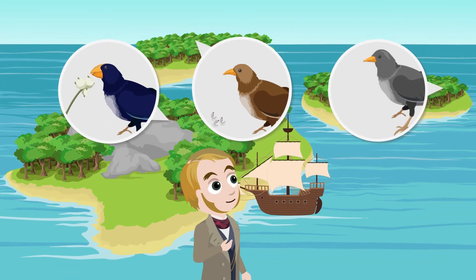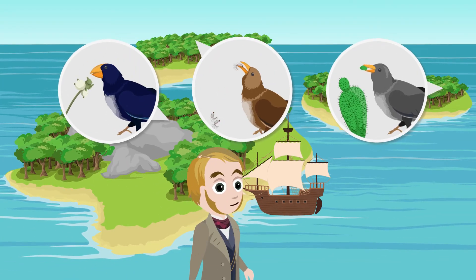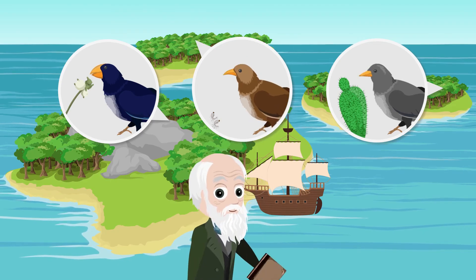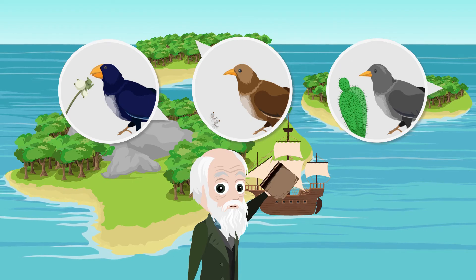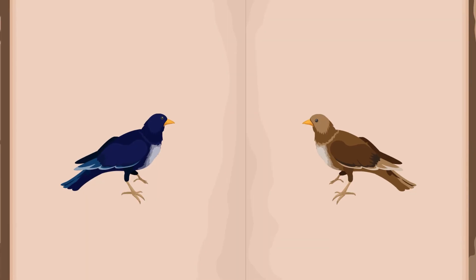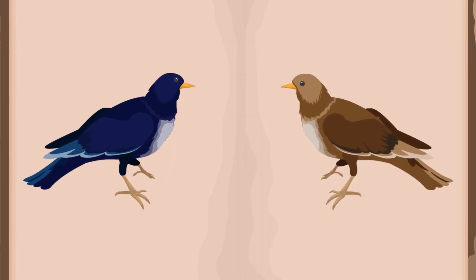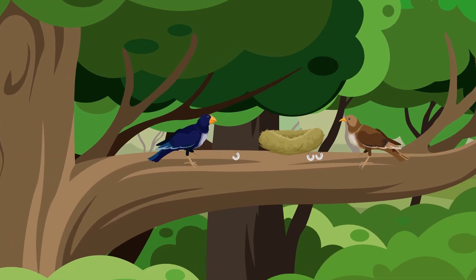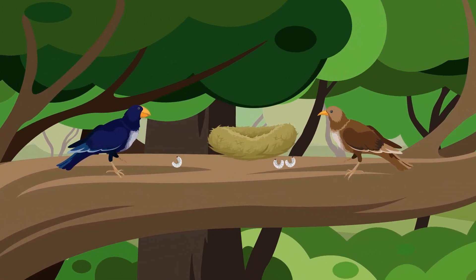Darwin thought that the birds had adapted to their environments and he developed a theory. In the year 1859, he published the book On the Origin of Species. He described how animal and plant species have evolved from other species through small changes and slow adaptation to their environment.